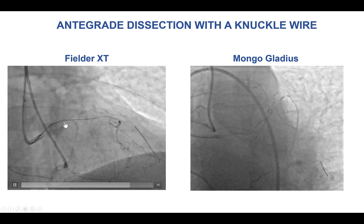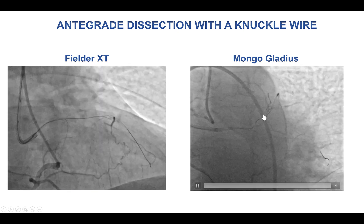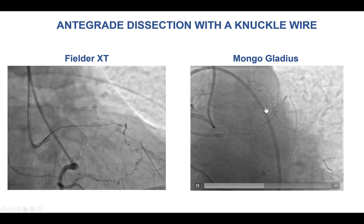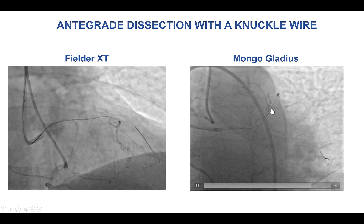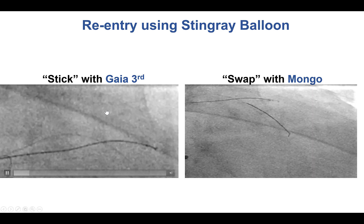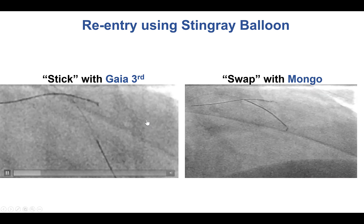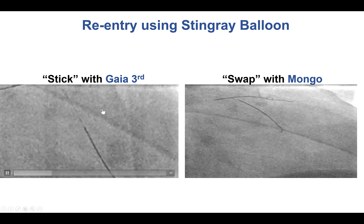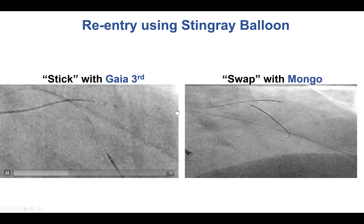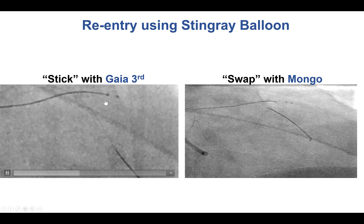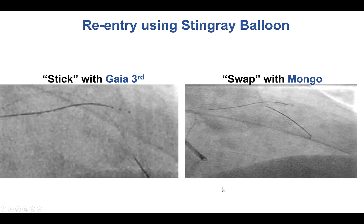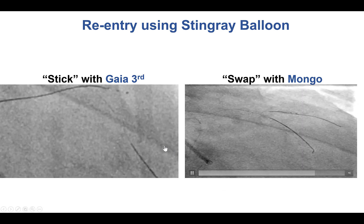After that, we were able to advance a Fielder XT, which seemed to knuckle in the course of the vessel, followed by a Mongo Gladius wire. We were then in the mid-LAD and decided to re-enter using the stick and swap technique. Unfortunately, once subintimal in the mid-LAD, we had poor visualization from the right coronary collaterals.